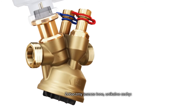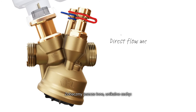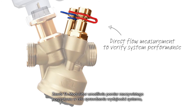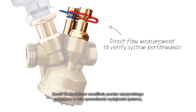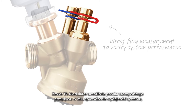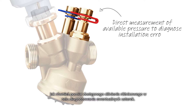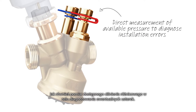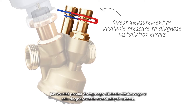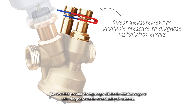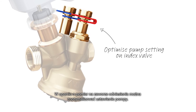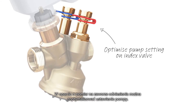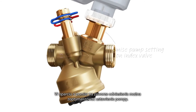With TA Modulator, you can measure the true flow through the valve to verify the system performance, as well as measure the available differential pressure to diagnose possible installation errors. On the index valve, you can optimize pump setting.